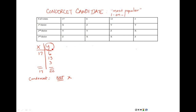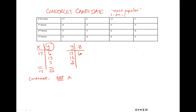Going back to the table and comparing Y and Z: in the first column, Y is ranked higher, so Y gets those 17 votes. In the next column of 6 votes, Z is higher, so Z takes those 6 votes. In the third column, Y is higher ranked, so Y takes those 13 votes. And in the last column, Y is ranked higher, so Y takes those 3 votes. Y walks away with 33 votes compared to Z's 6, so Y is the winner of the one-on-one match between Y and Z.